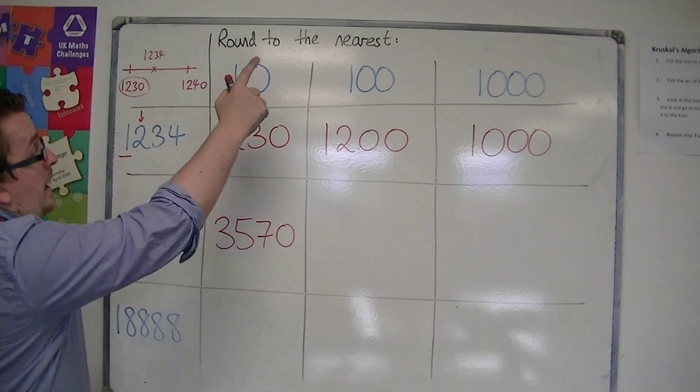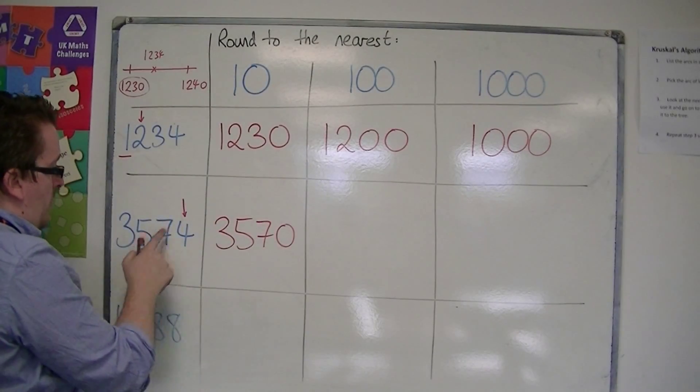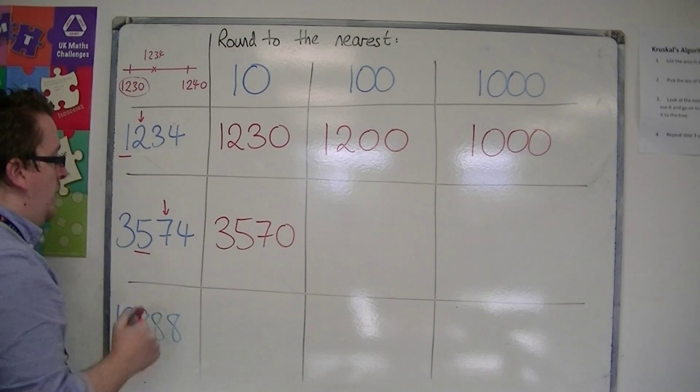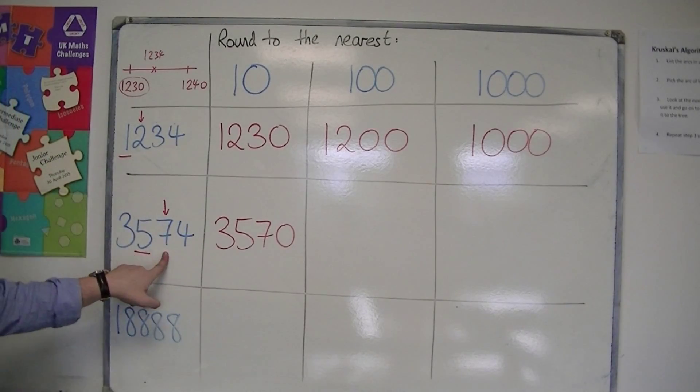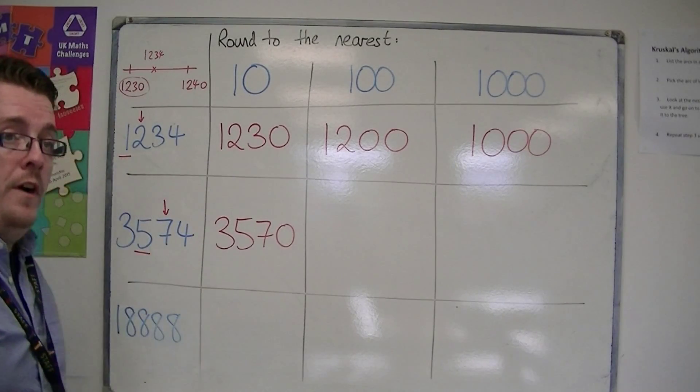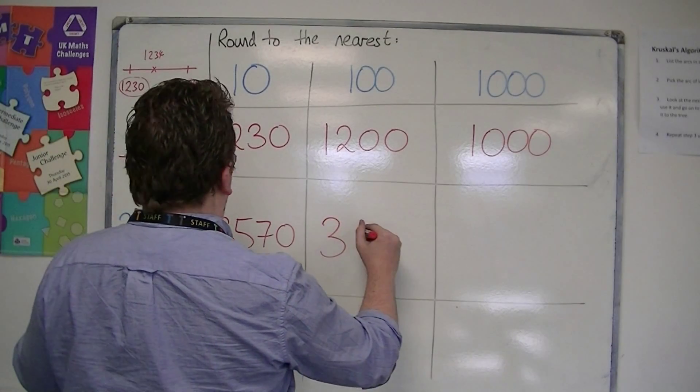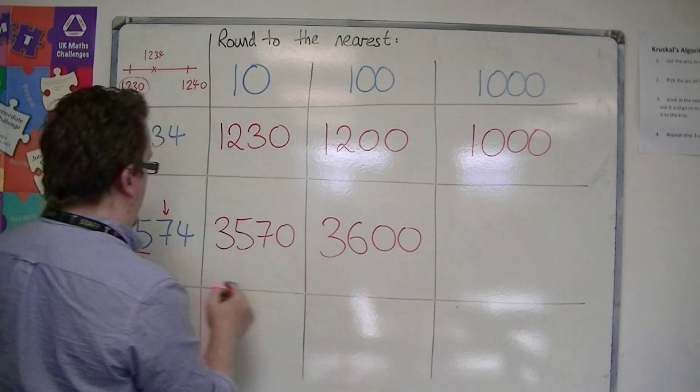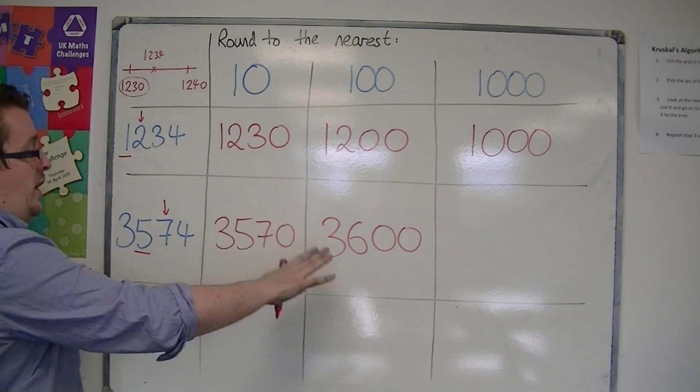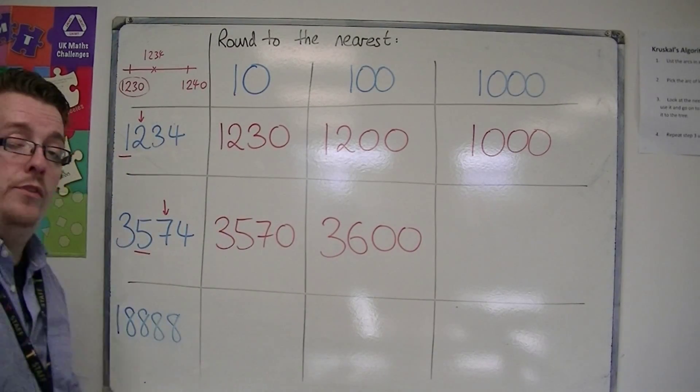I'm now looking at rounding to the nearest hundred, so I move one to the left. Look at the one on the right. Now, seven is more than five. Okay, so that's 3,600. Okay, so I've rounded it up to the nearest hundred. 3,600 rather than 3,500.